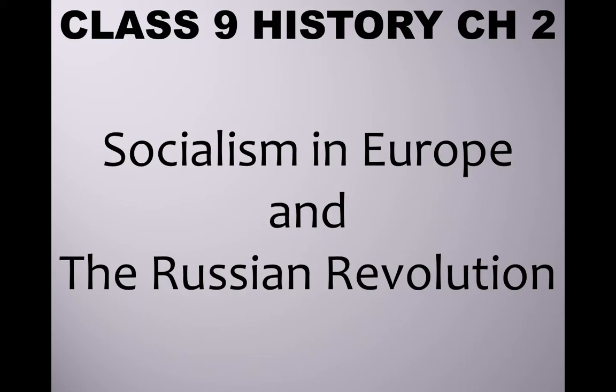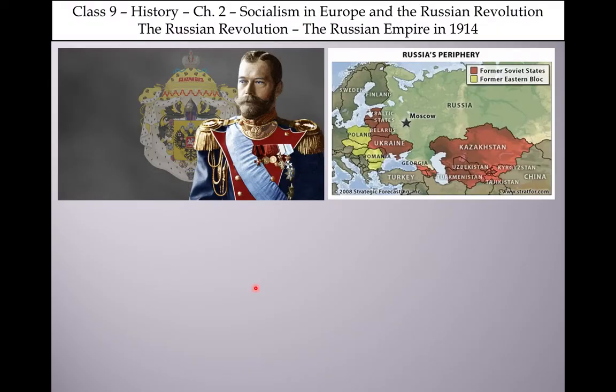Hello everyone, this is Class 9 History Chapter 2: Socialism in Europe and the Russian Revolution. We have read the Russian Revolution overview of what happened in the Russian Revolution, and now we have the first part.